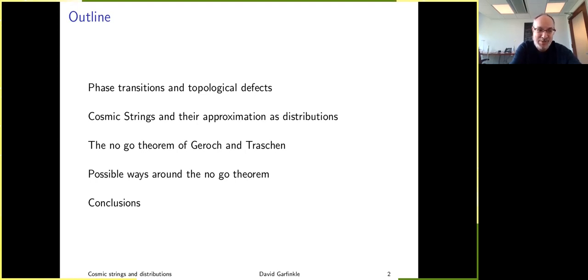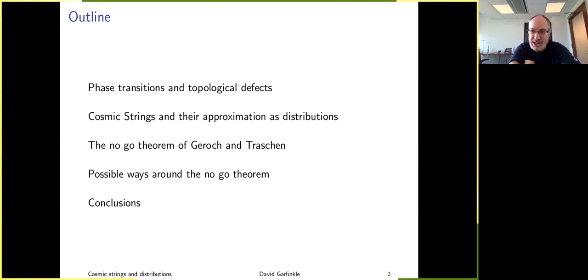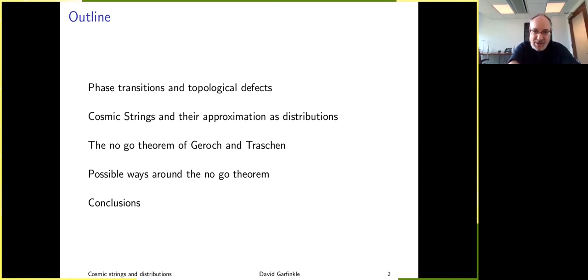Cosmic strings can be very long but also very thin, which leads to the temptation to model them as distributions — treating very thin objects as infinitely thin but still containing an appreciable amount of matter. I'll explain how that was done and what results follow. However, there are problems with treating objects of zero size in general relativity, in particular a no-go theorem due to Garroch and Traschen, which says you're really not allowed to treat cosmic strings as distributions in general relativity. Then I'll discuss possible ways to get around this no-go theorem, and finally give conclusions.